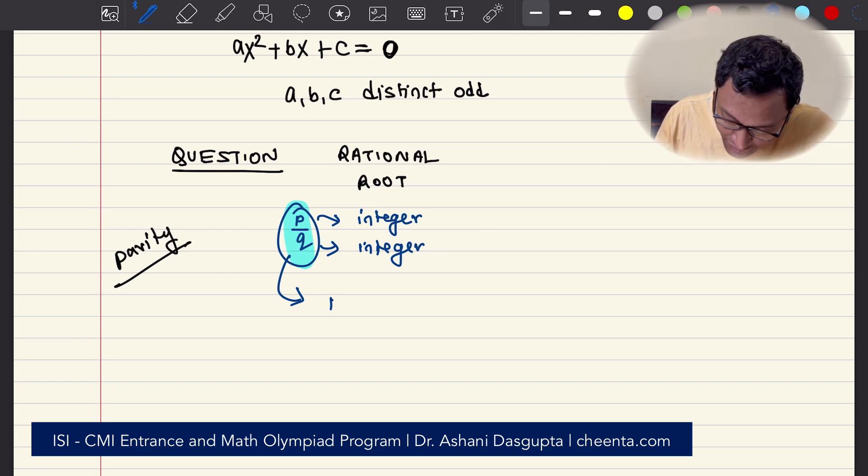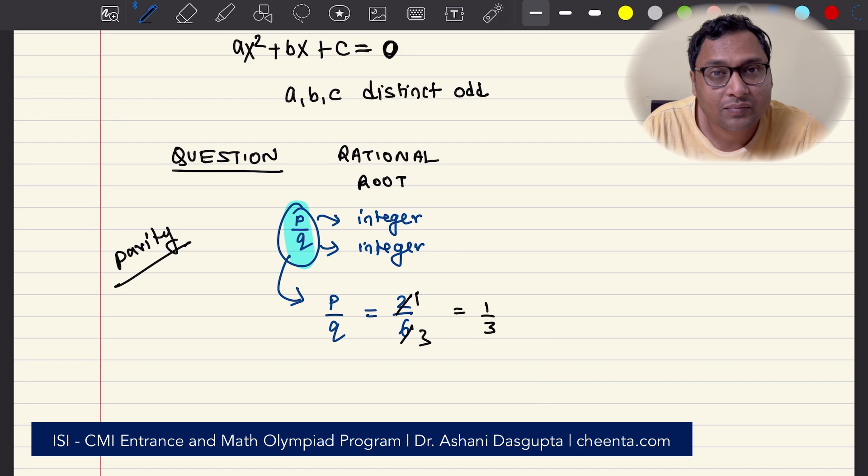For example, if P over Q is 2 over 6, then you can reduce it, you can cancel off the two and make it one third, and so on.